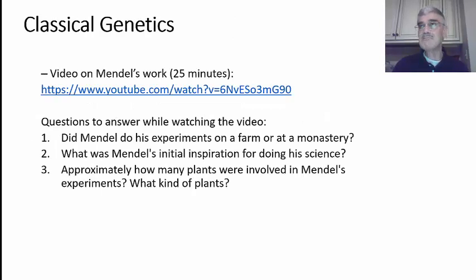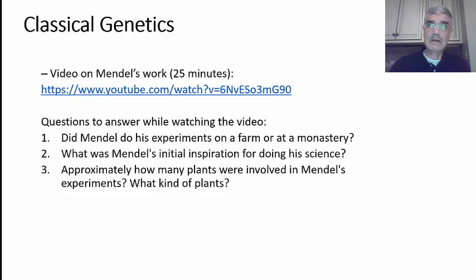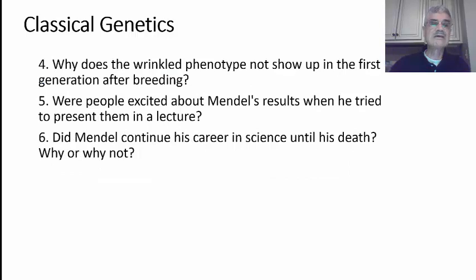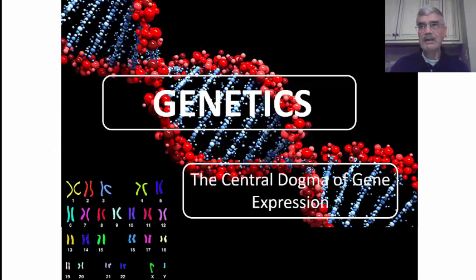I'd like for you to watch a YouTube video about Gregor Mendel. Here's the link and I'll post this in Blackboard as well. As you watch this video, consider the following questions which we'll discuss in class or Zoom: Did Mendel do his experiments on a farm or in a monastery? What was Mendel's initial inspiration for doing science? Approximately how many plants did Mendel use in his experimentation — pea plants? Why does the wrinkled phenotype — meaning how it looks — not show up in the first generation after breeding? Were people excited when Mendel presented his results? And did Mendel continue a career in research until his death, or what else did he do in his life?